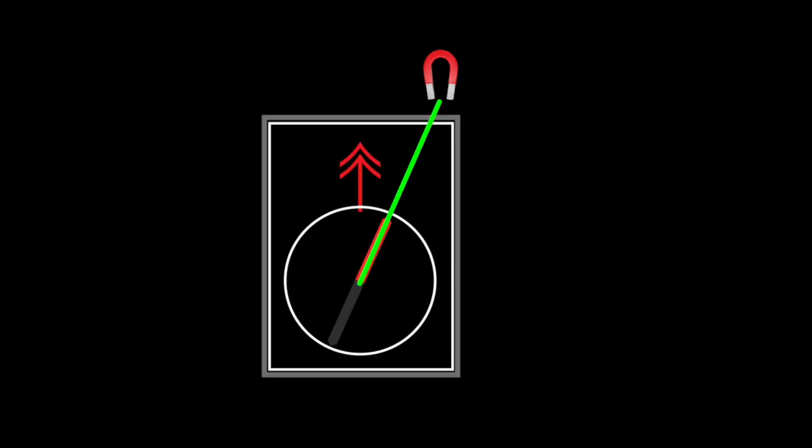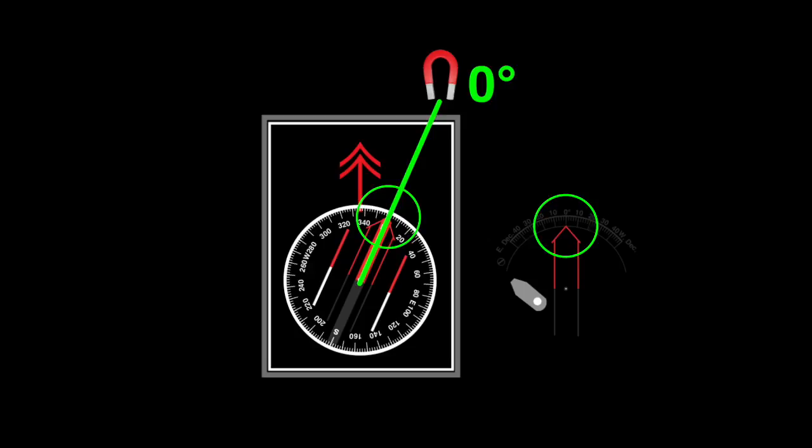It's common for the orienting arrow on your compass to point to north or zero degrees on the compass dial. When this is the case, your compass measurements are made relative to magnetic north and are called magnetic bearings.